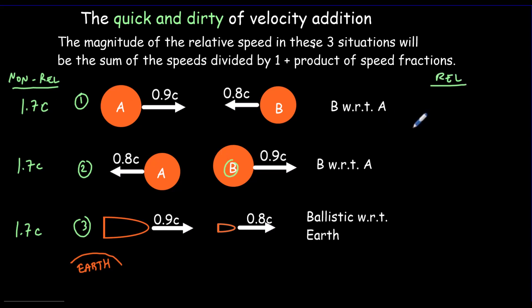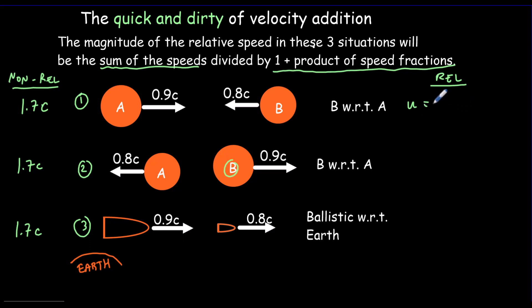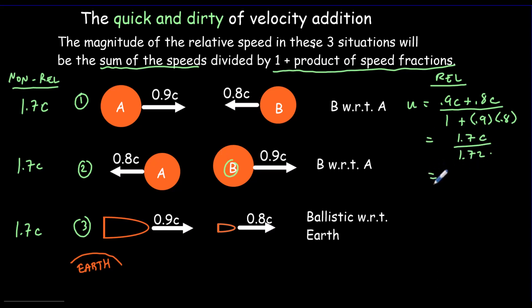If we do the relativistic treatment, we should also get the same answer in each case. The quick and dirty trick is to sum the speeds and then divide by 1 plus the product of the speed fractions. So the speed of the ballistic with respect to the Earth equals 0.9C plus 0.8C divided by 1 plus 0.9 times 0.8, which gives 1.7C divided by 1.72, equalling 0.988 times the speed of light — a speed less than the speed of light. This is the correct treatment, and all three scenarios give the same answer.